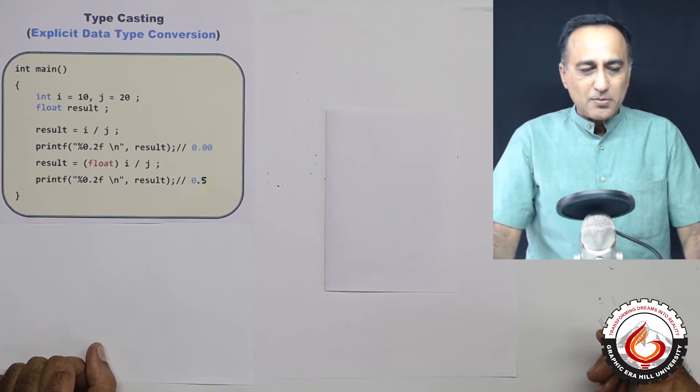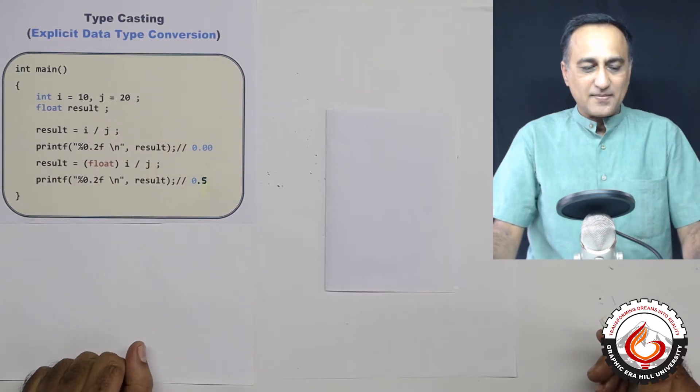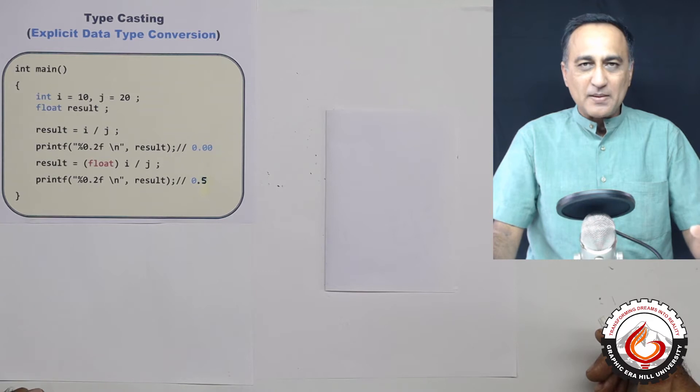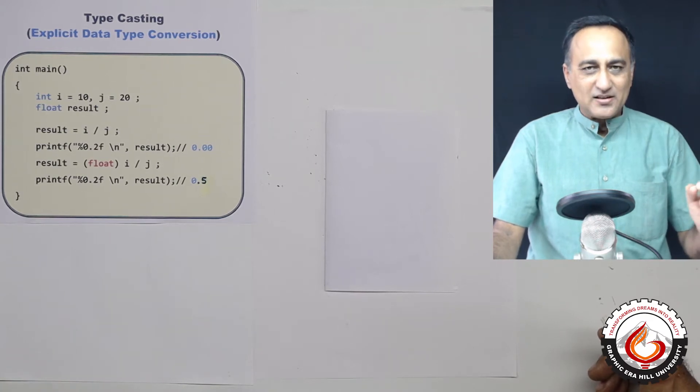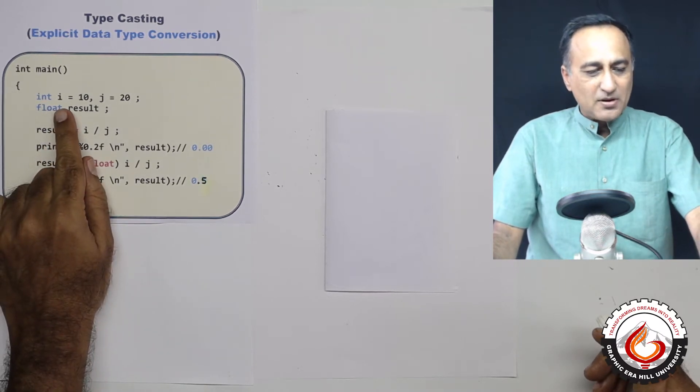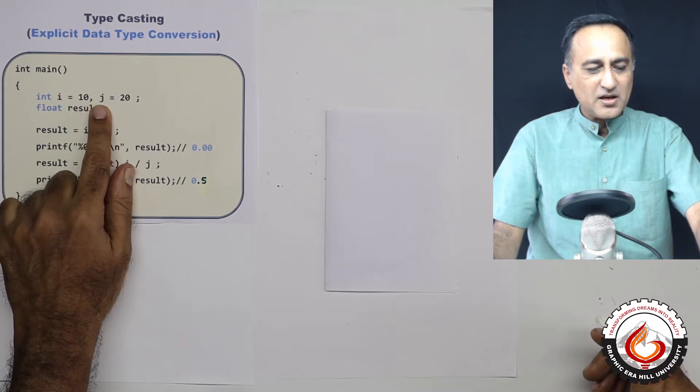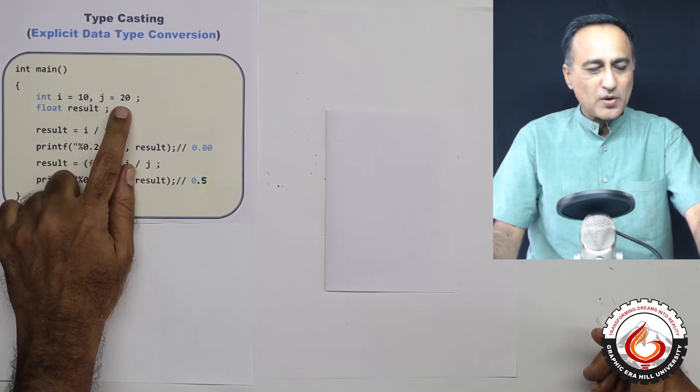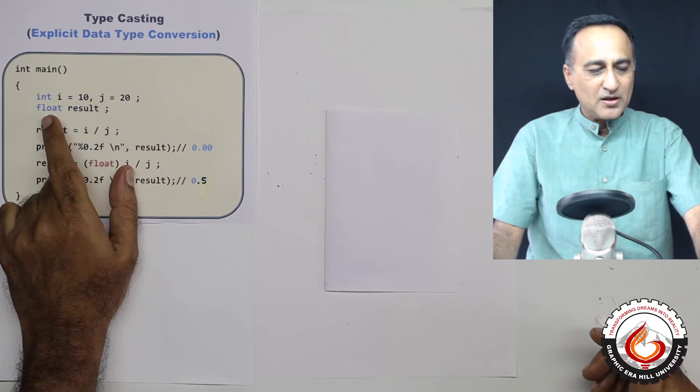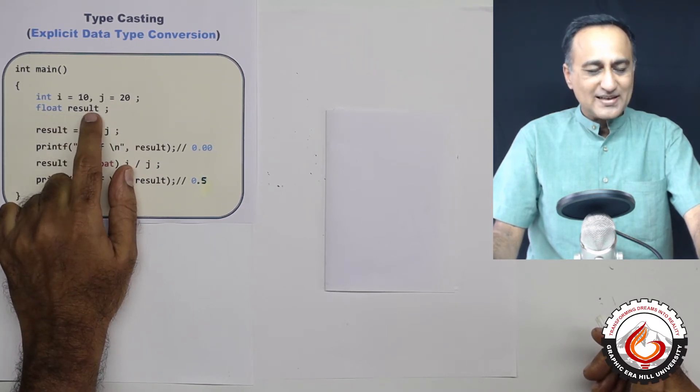When we're talking about explicit data type casting, it helps to look at a simple piece of programming code to understand the concept. Suppose I have an integer variable i whose value is 10, another variable j also of the type integer whose value is 20, then I have got a variable of the floating point type called result.